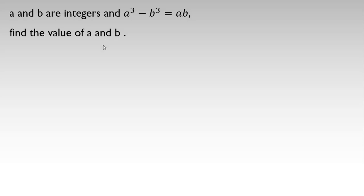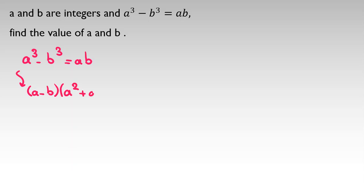For solving this, I rewrite the main equation: a cubed minus b cubed equals ab. We have a famous identity that a cubed minus b cubed is (a minus b)(a squared plus ab plus b squared), so we can say it is equal to ab.